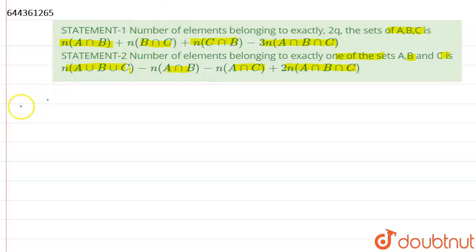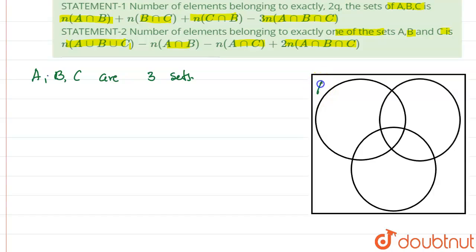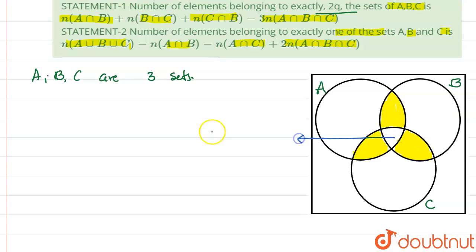Let us prove these statements one by one. Here A, B, C are 3 sets. First let us draw the Venn diagram. In this Venn diagram, the first circle is set A, the second circle is set B, and the third circle is set C. Statement 1 concerns elements belonging to exactly 2 of the sets. The parts belonging to exactly A and B, exactly A and C, and exactly B and C are identified, and the middle part belongs to all 3 sets, which is N(A∩B∩C).